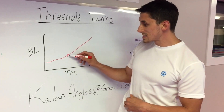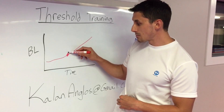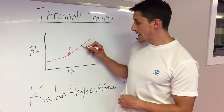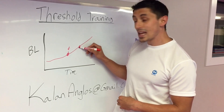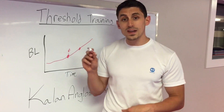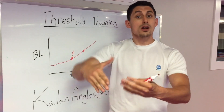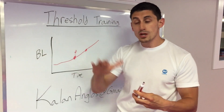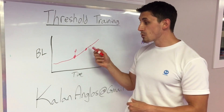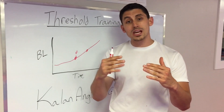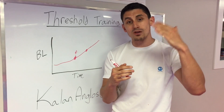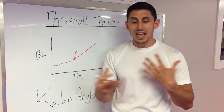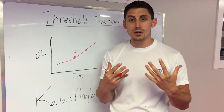If we can take this threshold point and make it higher, or make it happen later on in our training, we're going to be able to perform better for a longer period of time. So how do we get our anaerobic threshold or lactate threshold up so that we don't get that lactic acid build-up in our muscles?